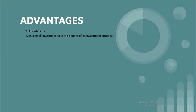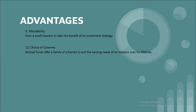The ninth advantage is affordability. Even a small investor can take benefit of investment strategy. The minimum amount of investment can be as low as Rs. 500, and the maximum can go up to whatever an investor wishes. The tenth advantage is choice of scheme. Mutual funds offer a family of schemes to suit the varying needs of an investor over their lifetime — including income schemes, growth schemes, and tax saving schemes — so there are varieties of funds available in the market.